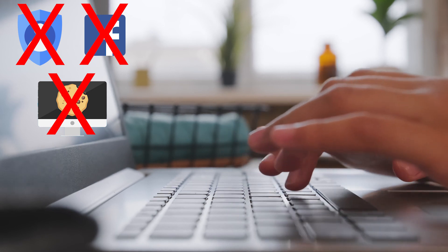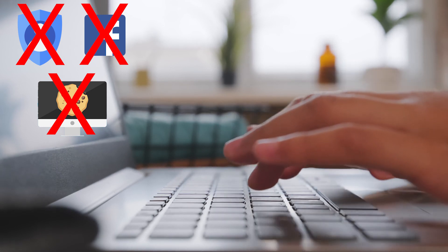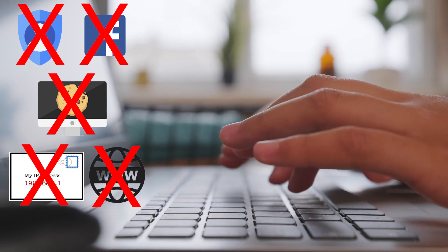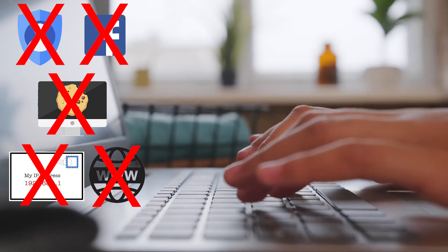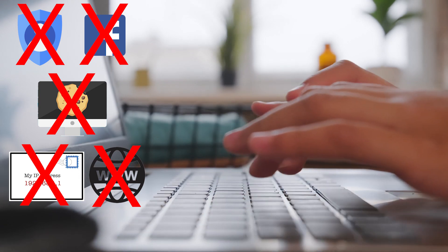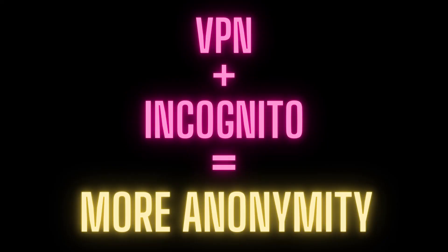If you have your VPN running at the same time, the websites you connect to can't see your real IP address, and your internet service provider can't see which websites you're connecting to. This allows you to browse in relative anonymity, although you're still trusting the VPN provider. While neither VPNs nor incognito mode can guarantee complete privacy, using them together brings you a lot closer to it than just using one.